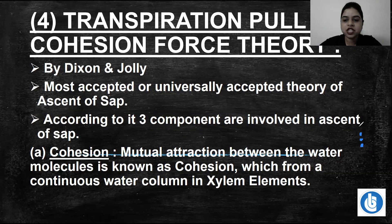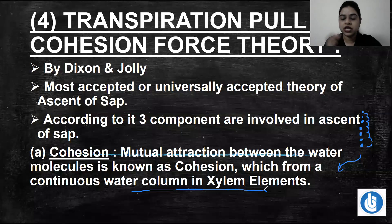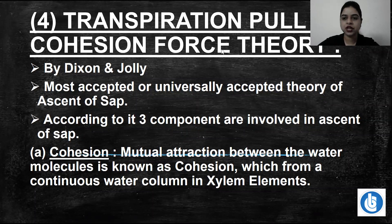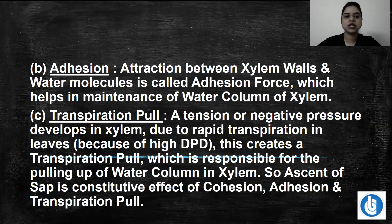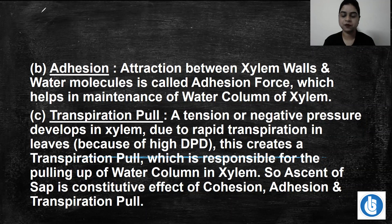Water column generation is because of cohesion force. The next force is the adhesion force. Adhesion force is the force of attraction that exists between two different types of molecules — in this case, water and the xylem wall. The continuous water column formed in xylem elements is called a continuous water column in xylem elements.